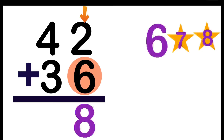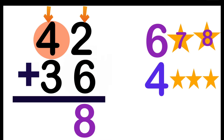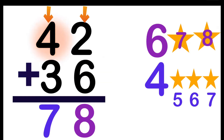Let's proceed to the 10's place. 4 plus 3. Again, look at the big number — 4. 4 on your mind, then add 3 more: 4, 5, 6, 7. So, 4 plus 3 is equal to 7. The sum of 42 and 36 is 78.